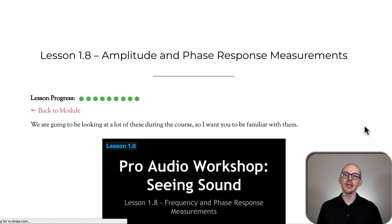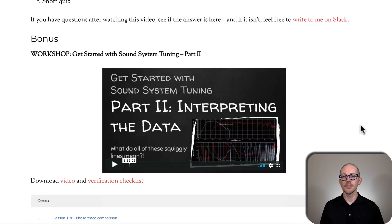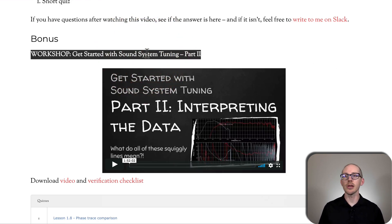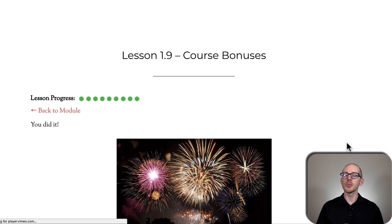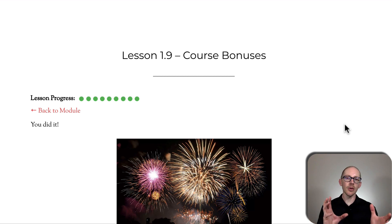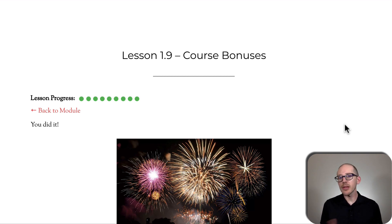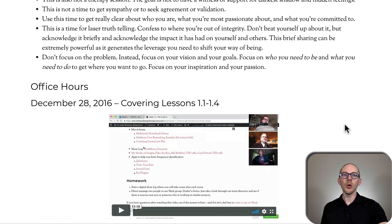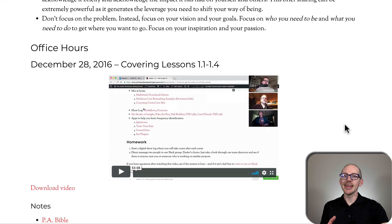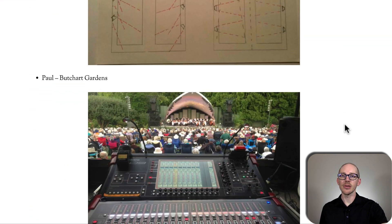Lesson 1.8 is about reading the amplitude and phase graph in your audio analyzer's transfer function, and here you also have access to Get Started with Sound System Tuning part two. The last lesson in the module gives you access to some special course bonuses depending on which package you purchased — either the standard or the accelerated. And in this lesson is where I keep all of the recordings of the office hours. At this point there are over 20 recorded office hours — you don't need to go through all of these, but they're here as a resource. As I scroll down you'll see all these recordings — it's almost like a whole other complete course within this course just on this page.